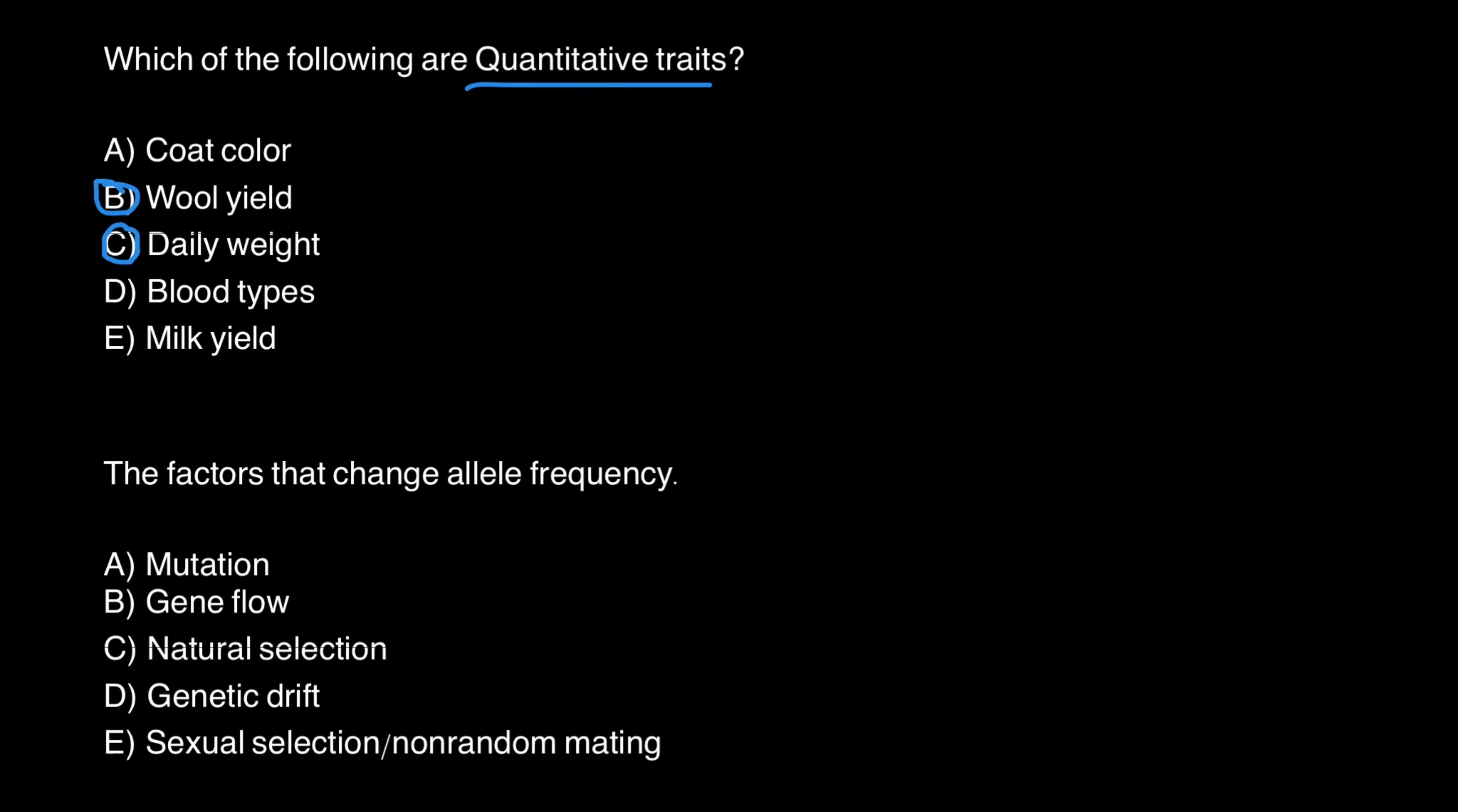Blood types, on the contrary, is an example of the qualitative trait, because just three alleles in humans, for example, specify blood groups. Four blood groups are specified by allele A, B, and O. And answer E, milk yield, also going to be an example of quantitative trait. So we have to choose three answers.